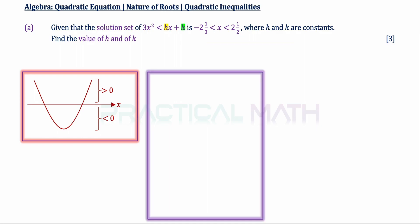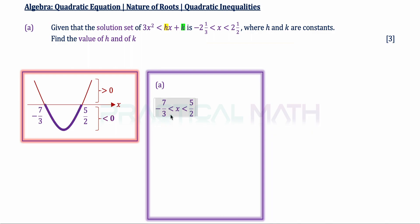In Step 1, we rewrite the mixed fractions: negative 2 and one third becomes negative 7 over 3, and 2 and a half becomes 5 over 2. This facilitates the working backwards process of writing into brackets. Transferring this information — negative 7 over 3 on the left intercept and 5 over 2 on the right intercept — this is one range, which refers to the part below the x-axis. This implies the quadratic inequality we are going to set is less than 0.